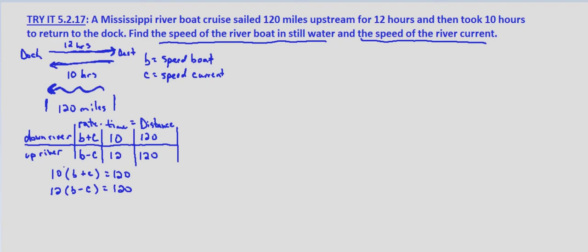Now typically what they show in the examples is to distribute these values, but if you'll notice both 10 and 12 go into 120 evenly. So I'm not going to distribute this. I'm going to divide both sides of the equation. If we divide the first equation by 10, we end up with b plus c equals 12. And we end up with b minus c, 120 divided by 12 equals 10. So here's our simplified system of equations: b plus c equals 12 and b minus c equals 10.